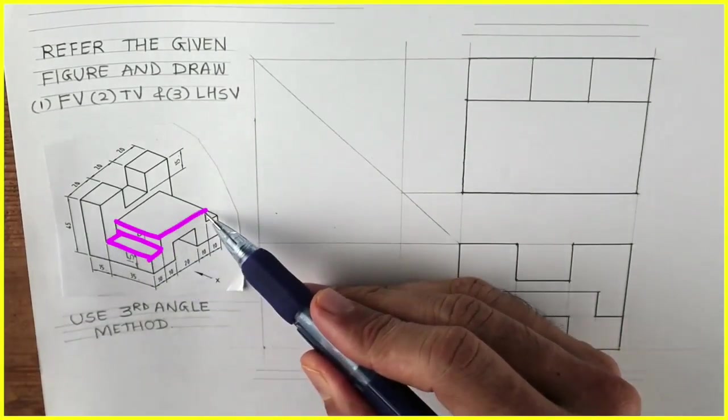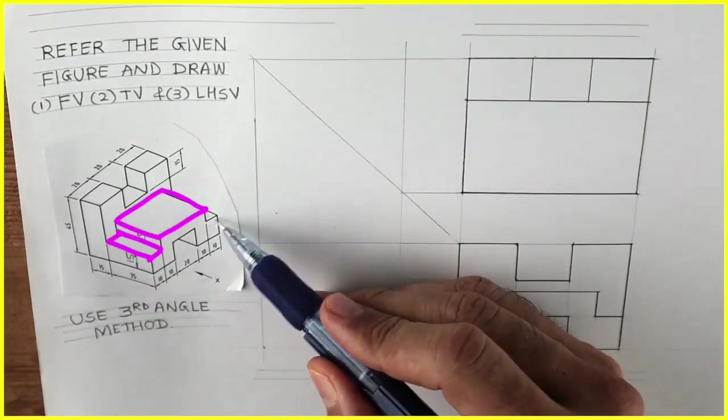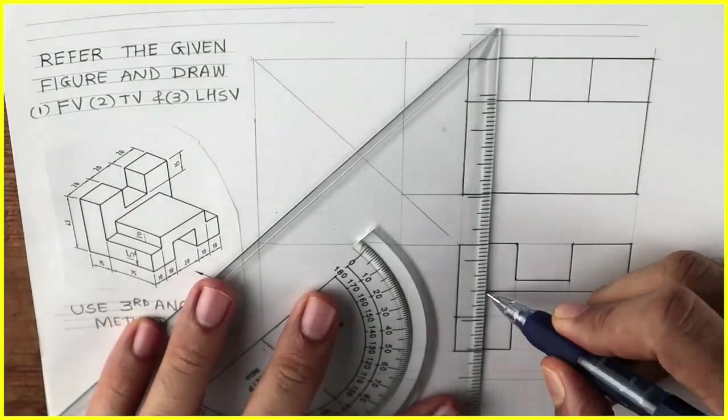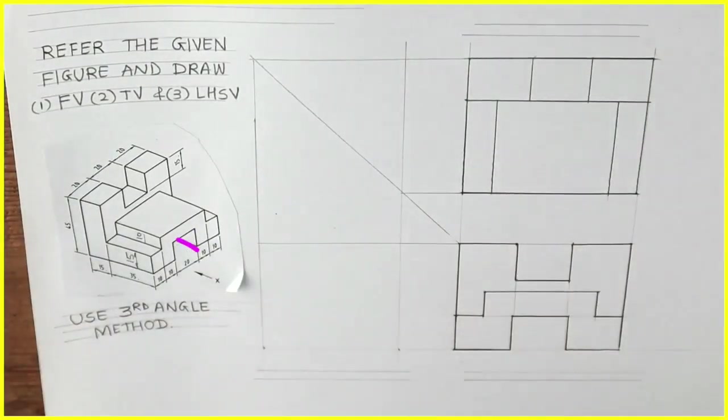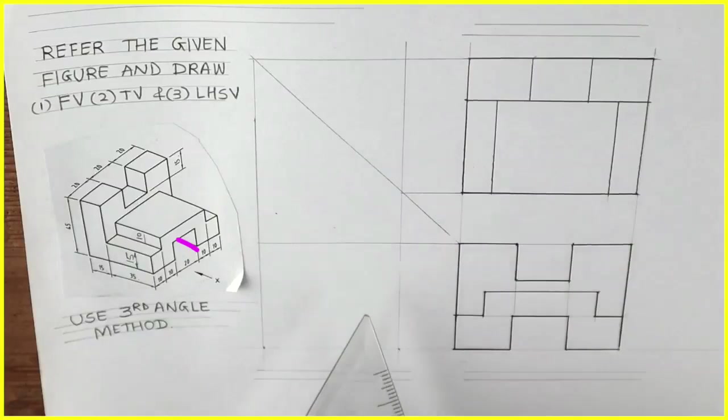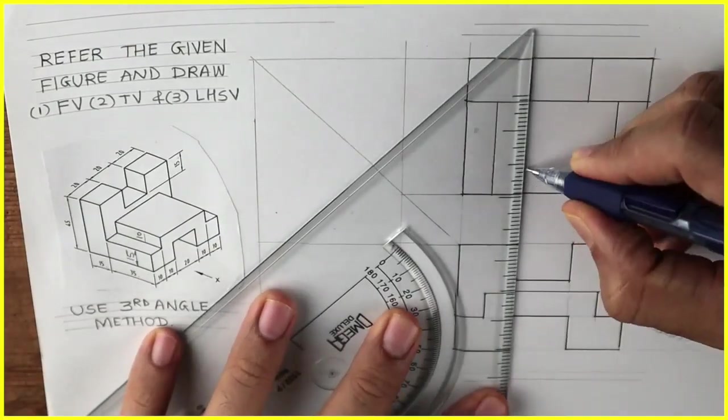This is the first one, second one, and third one. We can project from front view. After that, this line which we can't see, it is going through and through. See this. So that will be dotted.